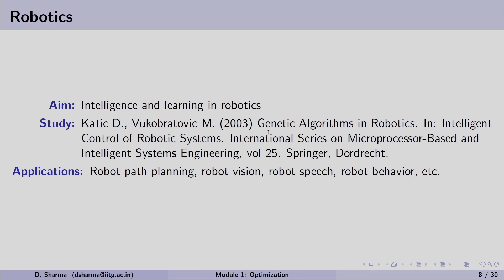Another interesting example is in robotics, where the aim is intelligence and learning. Learning in robotics can be done with the help of optimization. Back in 2003, two scientists used genetic algorithms for intelligent control of robotic systems. With this, they found applications in robot path planning, vision, speech, and behavior. It is a very interesting example where GA guides a robot to learn and apply intelligence to perform its assigned tasks.